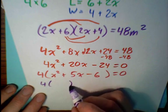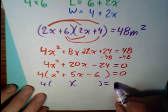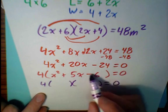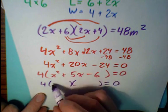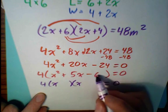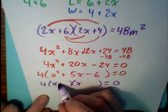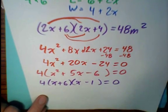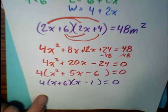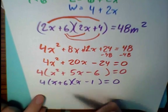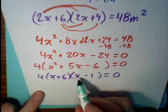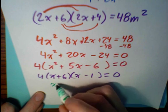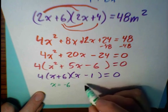4 times the quantity of 2 binomials. And I hope you see that if that's a negative 6 and that's a plus 5, what times what is negative 6 but adds up to 5? That would be a plus 6 and a negative 1. Now, using the 0 product rule, we have x plus 6 equals 0 or x minus 1 equals 0. So x can either equal negative 6 or x can equal 1.